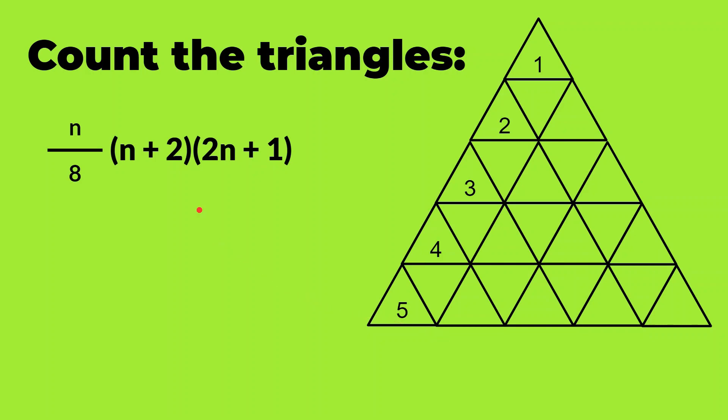So here we will write 5 instead of n. So 5 divided by 8 times 5 plus 2 which is 7 times 2 times 5, 10 plus 1, 11. So 5 times 7 times 11 which is 385 divided by 8 which is 48.125.